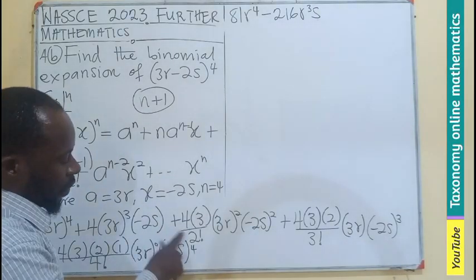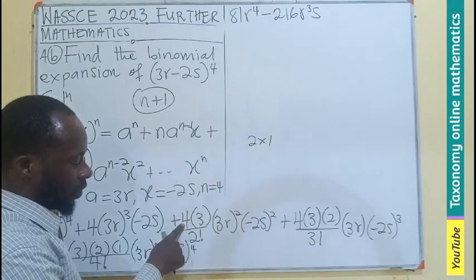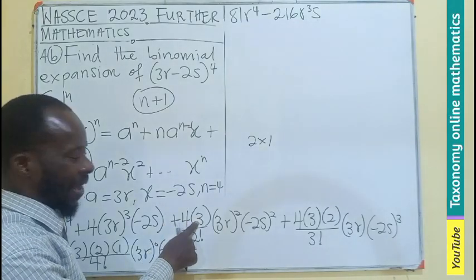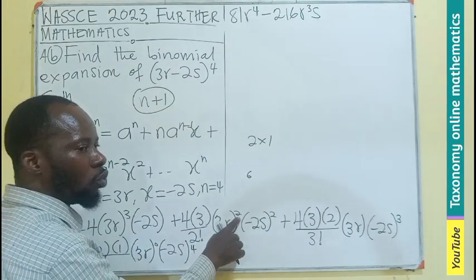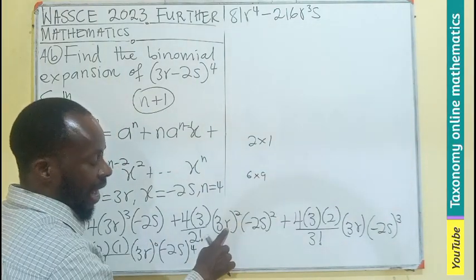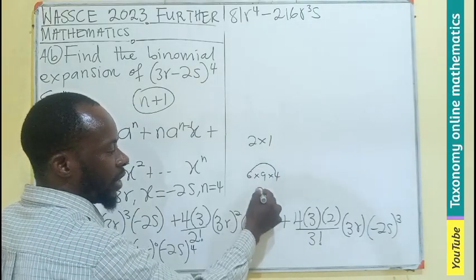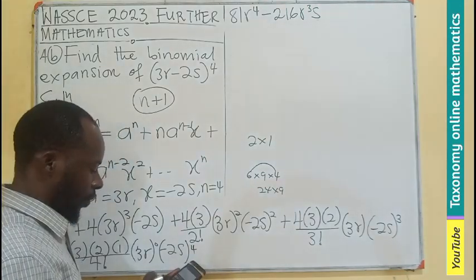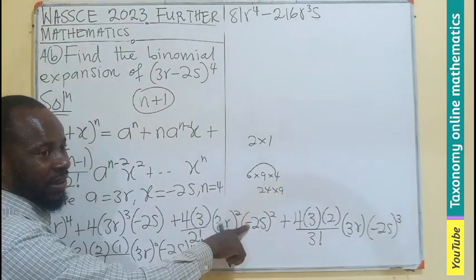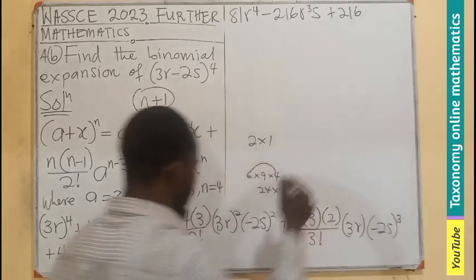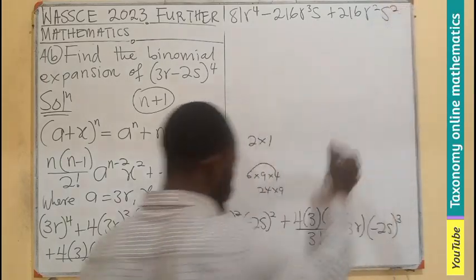Don't forget 2 factorial is 2 times 1. So 2 will cancel, leaving us with 6 as the coefficient for the third term. 3 exponent 2 is 9, and negative 2 exponent 2 is 4. So 6 times 9 times 4 gives us 216. The negative is now squared, so it becomes positive: plus 216 R exponent 2 S exponent 2.